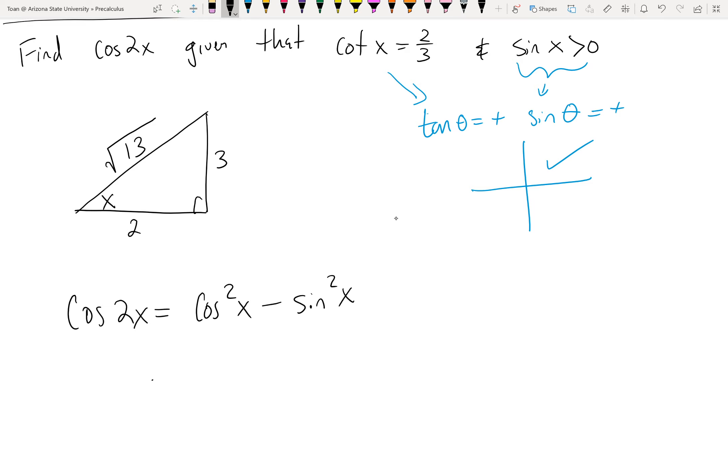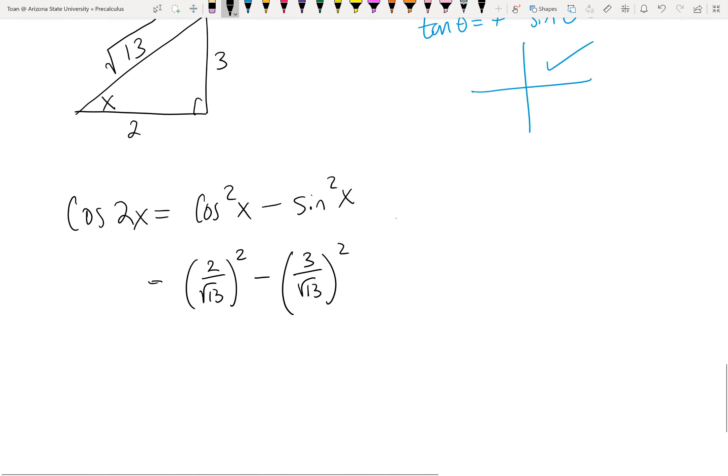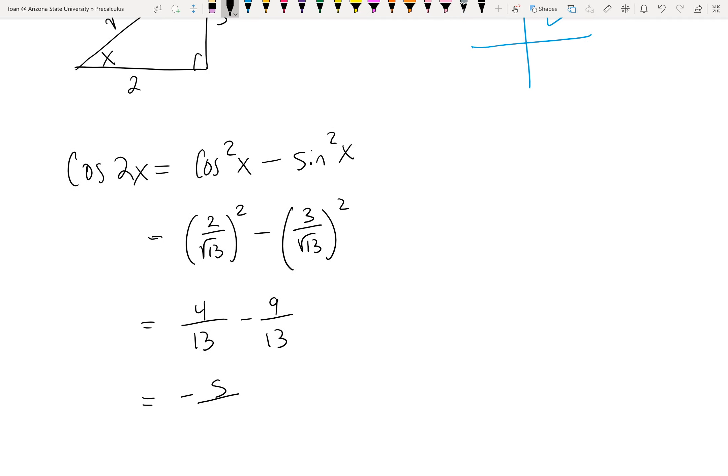And we can get all these values from just looking at the picture. So cosine is going to be two over radical thirteen, and we've got to square it, minus the sine, which is three over radical thirteen, and then we have to square it. So that's going to give us four over thirteen minus nine over thirteen, which is negative five over thirteen. Easy peasy.